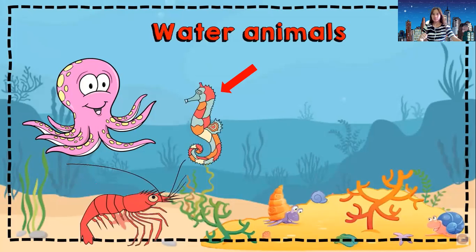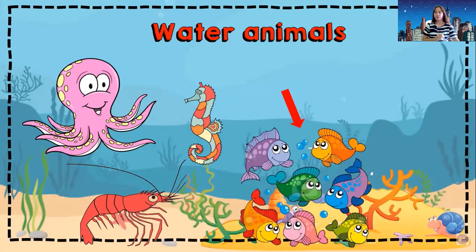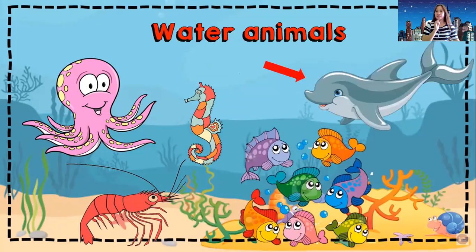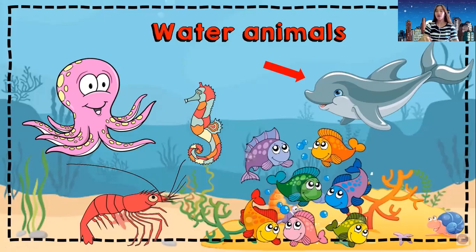They live in the water. Next, it looks like a horse — what's this? It's a seahorse. Yes, a seahorse is a water animal. How about this one? Fish — yes, fish is a water animal. Dolphin — yes, a dolphin is a water animal. All of these animals' habitat is in the water; all of these animals cannot live on land or in the air because their habitat is in the water.